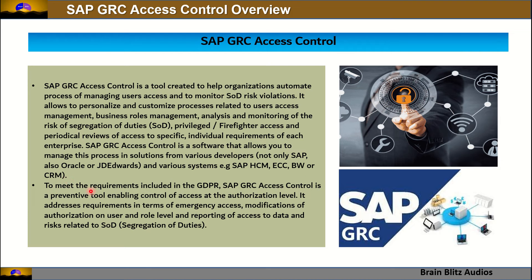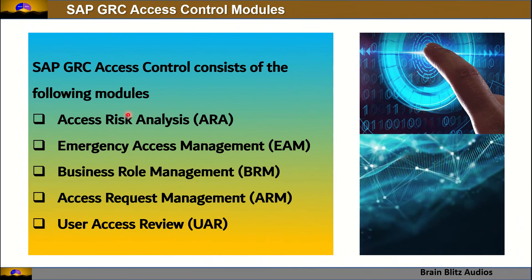To meet GDPR requirements, SAP GRC Access Control is a preventive tool enabling control of access at the authorization level. It addresses requirements in terms of emergency access, modifications of authorization on user and role level, and reporting of access to data and risks related to segregation of duties. Its modules are: Access Risk Analysis, Emergency Access Management, Business Role Management, Access Request Management, and User Access Review.